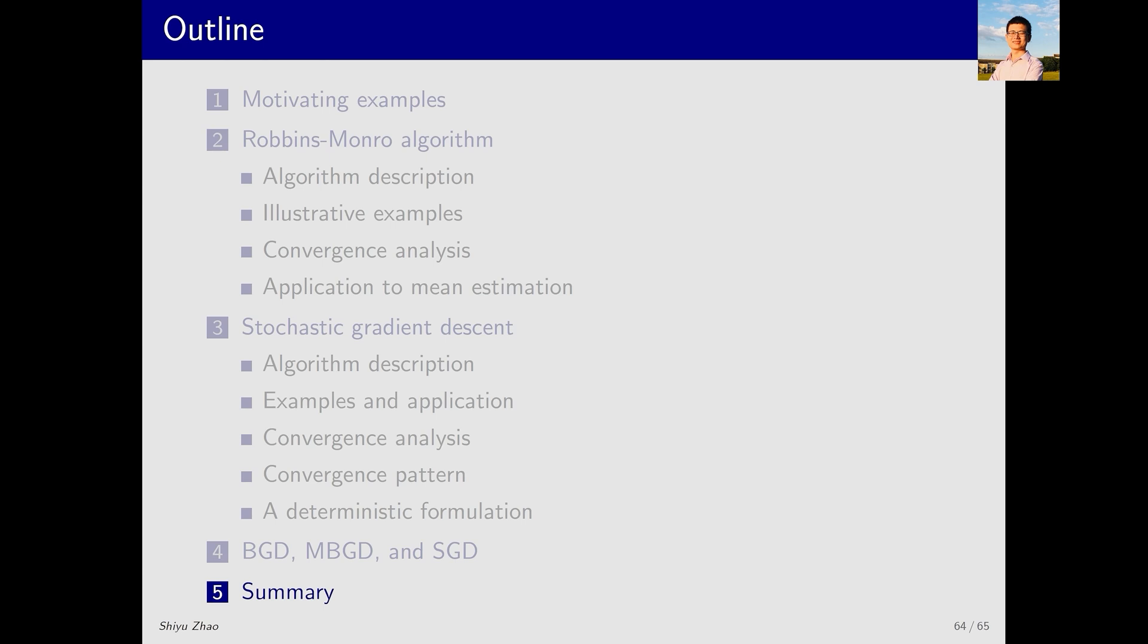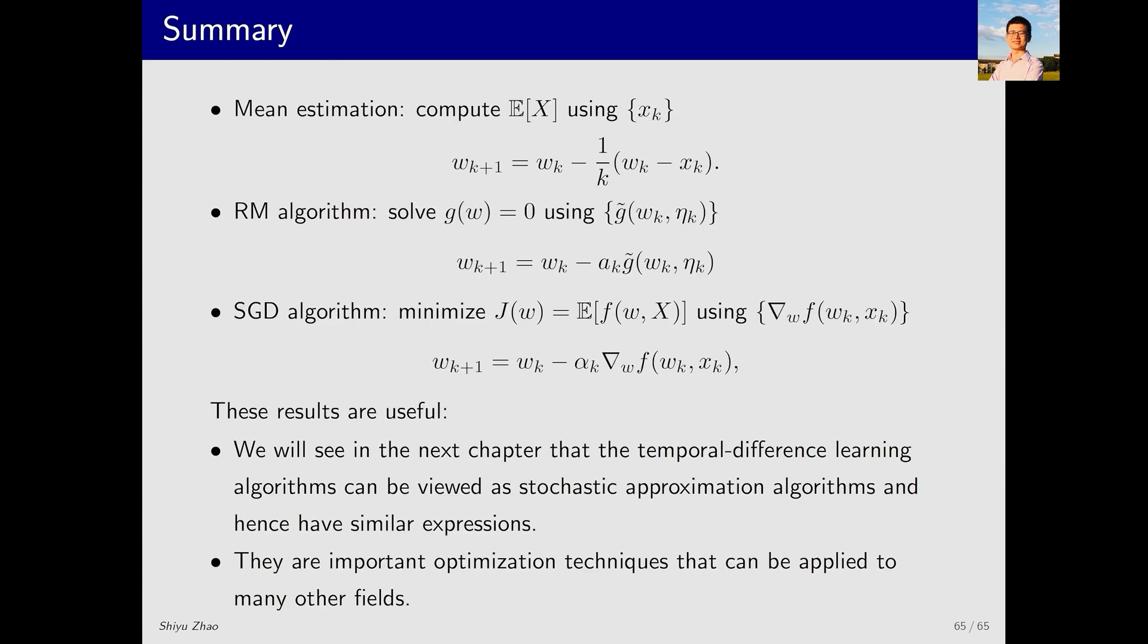This concludes all the content for this lecture. Let's summarize. In the first part, we introduced the mean estimation problem. The problem involves using a set of samples to estimate the expectation. Previously, we simply calculated the average of the samples to approximate the expectation. Now, we know that we can use an incremental manner to achieve this. That is, as we obtain each sample, we compute the average incrementally, making the process more efficient since we do not have to wait for all samples.